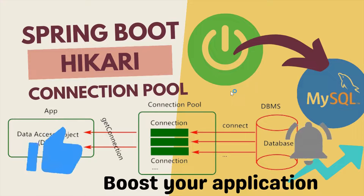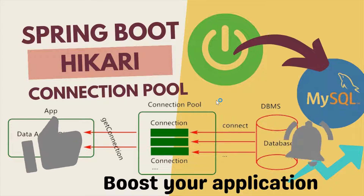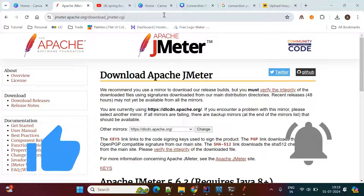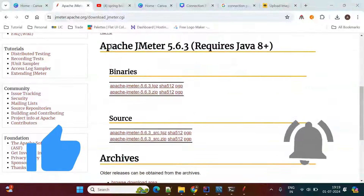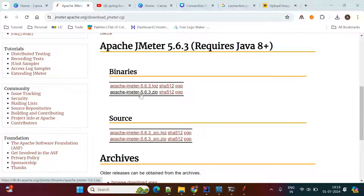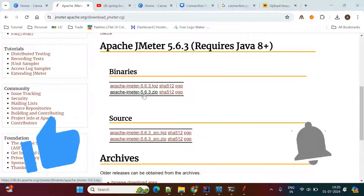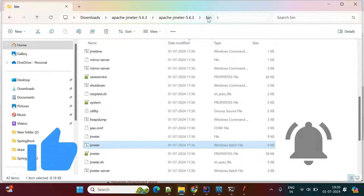To test this connection pool application we need JMeter. I will quickly show you how to download JMeter and how to test this application through it. You can go to the JMeter website, click Download Releases, and it will show JMeter 5.6.3. Download the binary — Apache JMeter 5.6.3. I will give you this link in the description. Once downloaded, unzip it and go to the bin folder where you will find the JMeter Windows batch file.